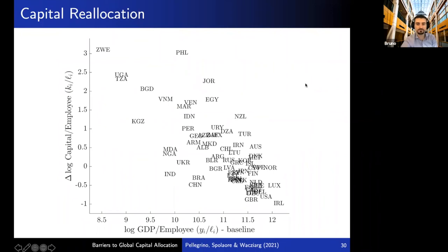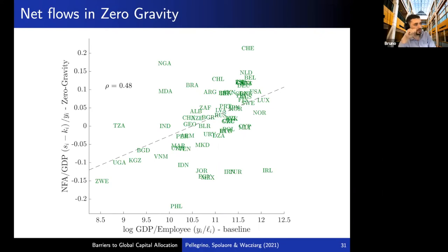The reason for this reduction in inequality: when you go to zero gravity, countries that get reallocated more capital tend to be poorer countries — those starting from a low level of capital or GDP per employee. Countries that lose capital tend to be capital-rich countries. Also, the net foreign asset position flips in zero gravity: rich countries become net providers of capital and poor countries become net receivers. This is why we can speak to the Lucas puzzle.